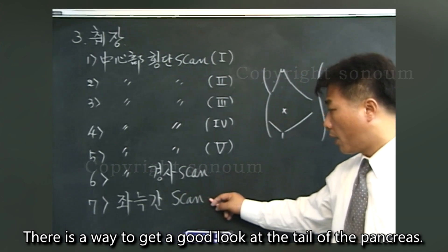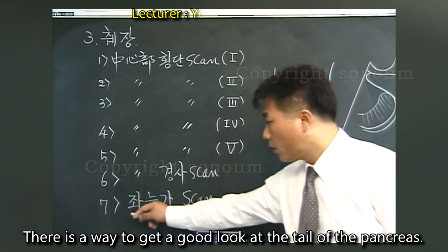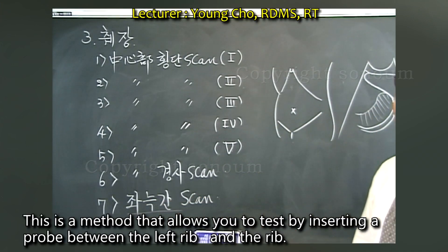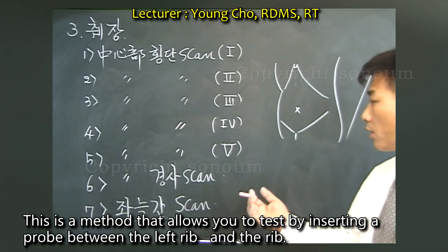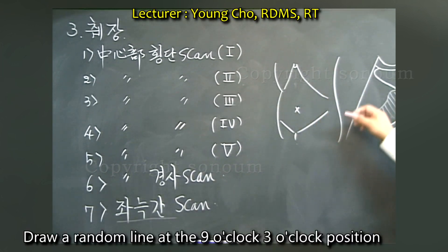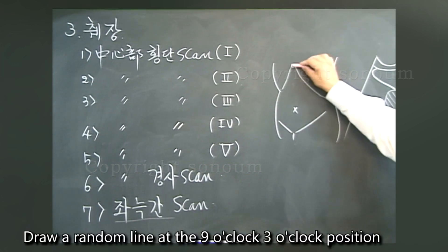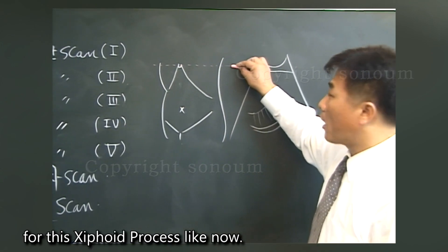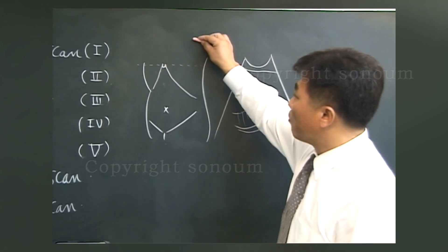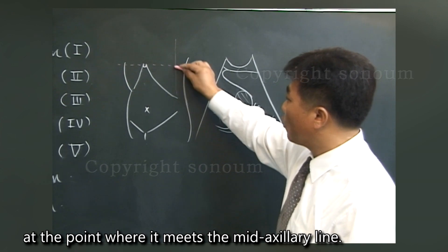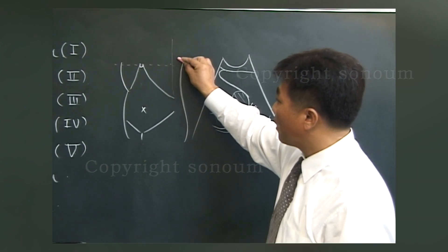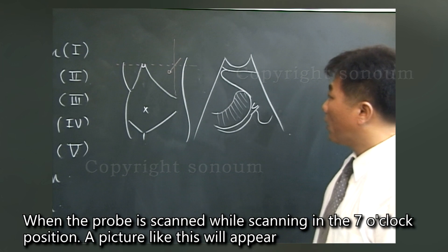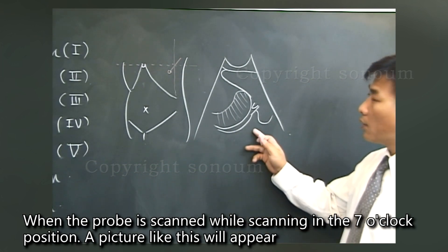There is a way to get a good look at the tail of the pancreas. This is a method that allows you to test by inserting a probe between the left rib and the rib. Draw a line at the 9 o'clock to 3 o'clock position for the xiphoid process, at the point where it meets the mid-axillary line. When the probe is scanned in the 7 o'clock position, a picture like this will appear.